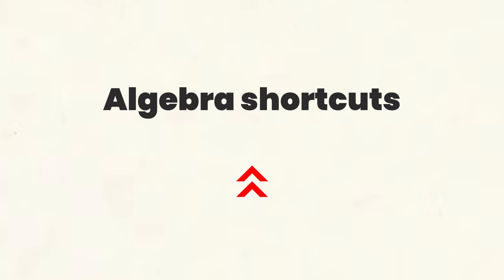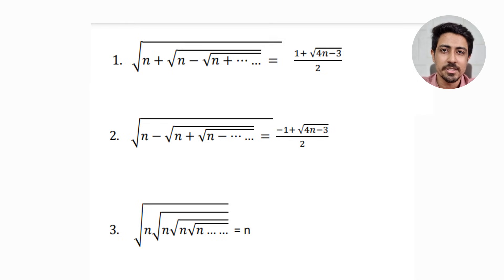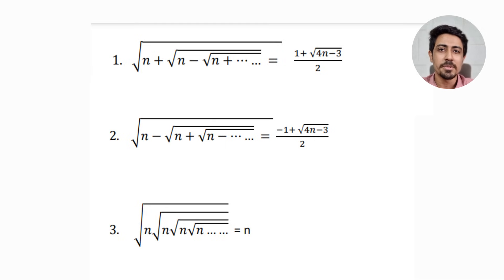Going to some of the algebra shortcuts, you can see some typical identities that are asked — I have put them on the screen. You can screenshot, save this, or write it down in your copy. I only remember these at the moment; if you're facing a particular problem, comment and I'll recall if there's a generalized formula. Let's take an example of the last one: if you have a question like √5, √5, √5... and so on for infinite times, the answer for that will be 5. That is how these particular problems can be solved.